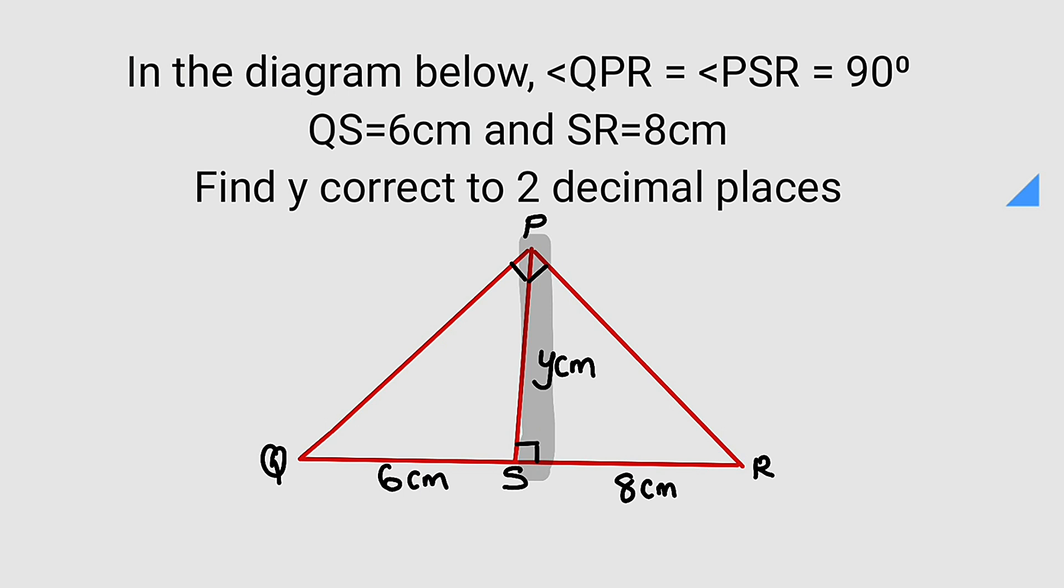Before we start calculating, let us relate some sides here. You can see if you relate this and this, QP is said to be the hypotenuse, and the hypotenuse could be obtained by taking the square root of 6 squared, which is 36, plus the other side which is y squared. Again, you can relate this side and this side together, which implies that PR is said to be the hypotenuse here. Therefore the hypotenuse will be the square root of 8 squared, which is 64, plus the other side which is y also squared.